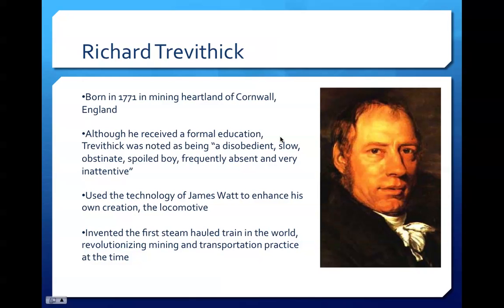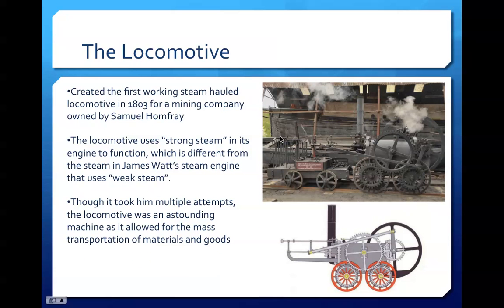After several failed attempts at creating a successful locomotive, Trevithick finally succeeded for Samuel Homfrey in 1803, producing the first steam-hauled train in the world. The locomotive was designed for the mining company owner Samuel Homfrey and was useful for transportation and hauling of materials and goods. Trevithick transformed James Watt's steam engine by increasing the pressure it could process and withstand, inventing a higher-capacity engine capable of moving the locomotive body. With this last machine, we can see a major step forward toward modern machinery, and the lifestyle changes that would follow also came with it.